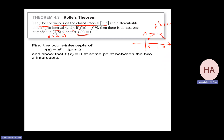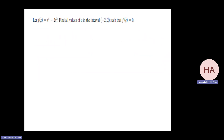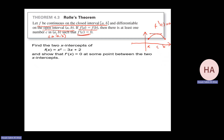Let's do examples. Find the two x-intercepts of this function. The idea is to find where f(a) equals f(b). When f(a) equals f(b) equals 0, we factor: x minus 2 times x minus 1 equals 0.